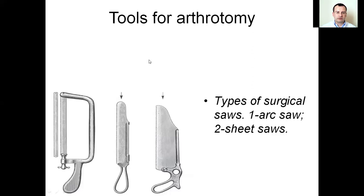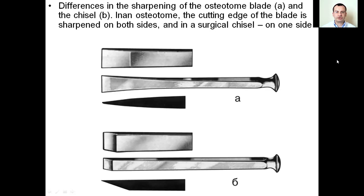Tools for arthrotomy. Surgical saws: the first is the arc saw, and the other two are the sheet saws. Difference in the shaping of the osteotome blade and the chisel: in an osteotome, the cutting edge of the blade is sharpened on both sides, and in the surgical chisel on one side.